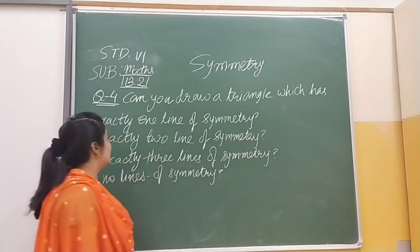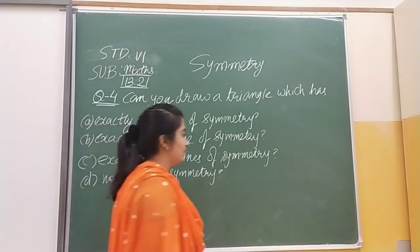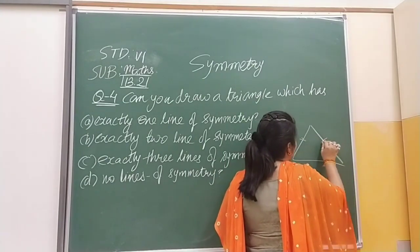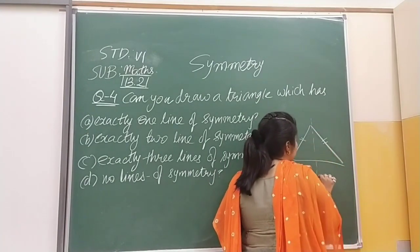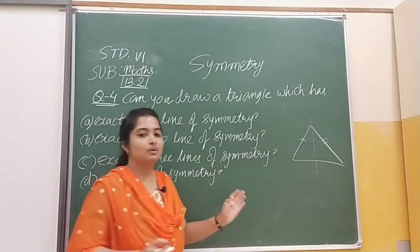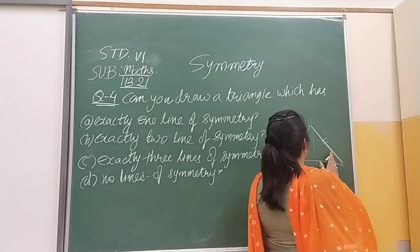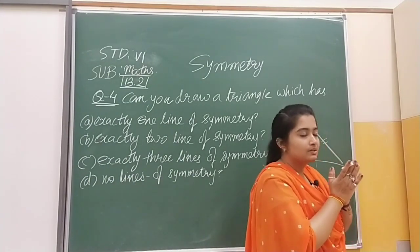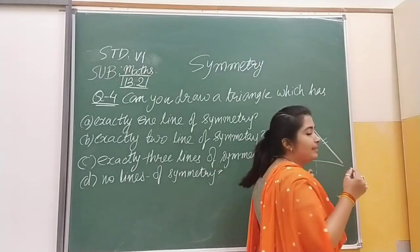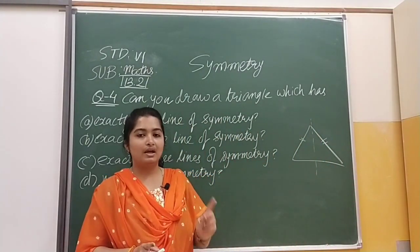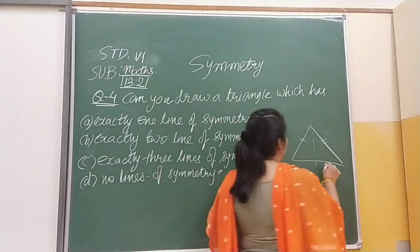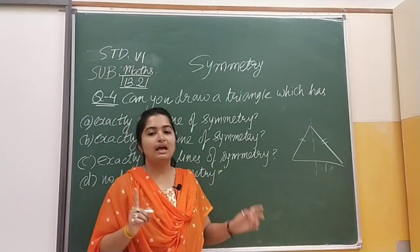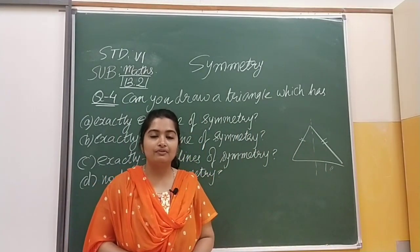First of all, we have given that exactly one line of symmetry. We discussed that if we have an isosceles triangle, jiski two sides equal hongi, toh agar hum usko beech mein se cut karenge, beech mein se line draw karenge, toh we will get exactly — usko hum overlap karenge dusre pe — that will be exactly the same, matlab dono same honge humare paas. So when we have an isosceles triangle, toh usme one line of symmetry milegi. That is the example of one line of symmetry — when we have an isosceles triangle, we can get one line of symmetry.